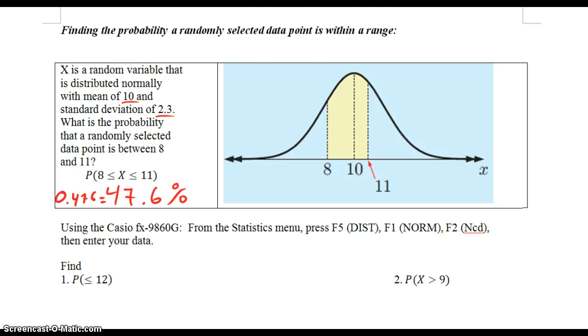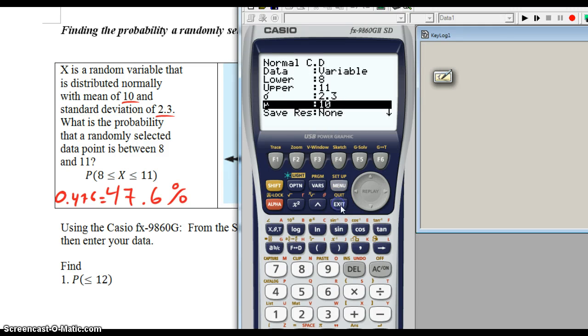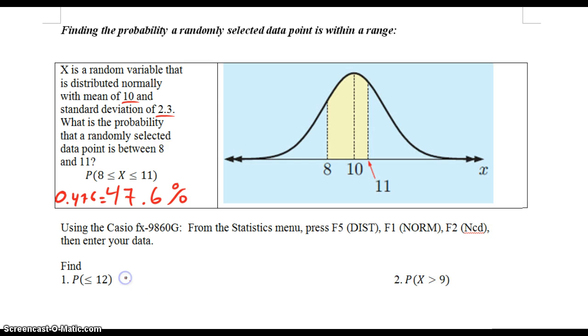We go back to our calculator. Less than 12 means the lower is going to be 0, the upper is going to be 12. You can see that it is 80.77, so it's 80.8 percent. That's the probability.